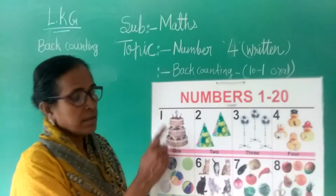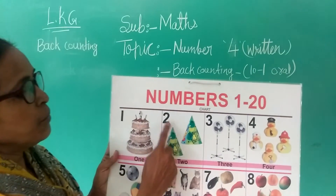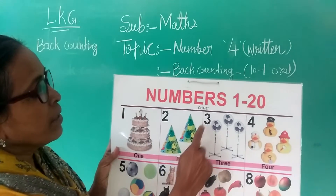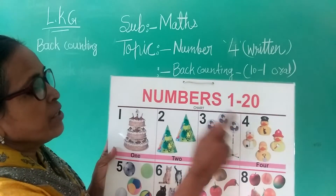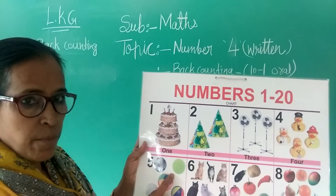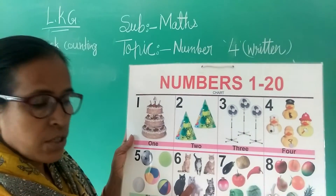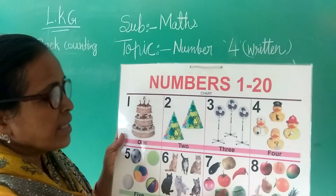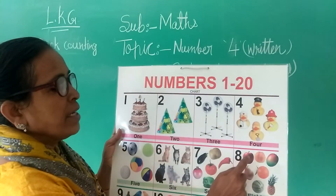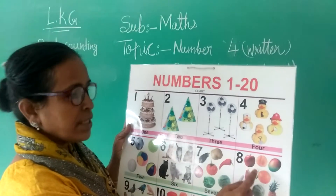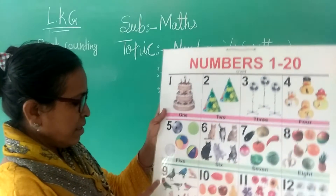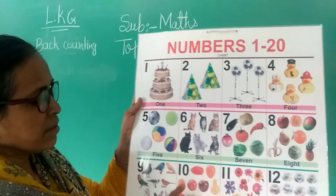1 — 1 cake. 2 — 2 cakes. 3 — 1, 2, 3. 4 — 4 snowmen. 5 — 5 balls. 6 — 6 cakes. 7 — 7 vegetables: 1, 2, 3, 4, 5, 6, 7. 8 — 8 fruits: 1, 2, 3, 4, 5, 6, 7, 8. 9 — 9 birds.